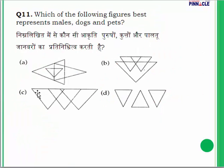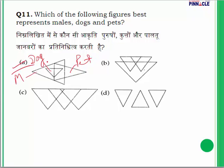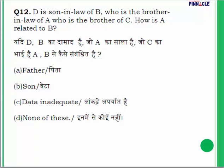Question 11: Which figure best represents 'male dogs' and 'pets'? The word 'male' applies to dogs, and some male dogs may also be pets. The correct Venn diagram is option A.